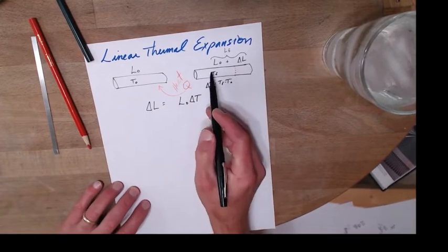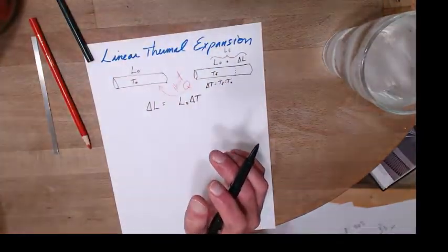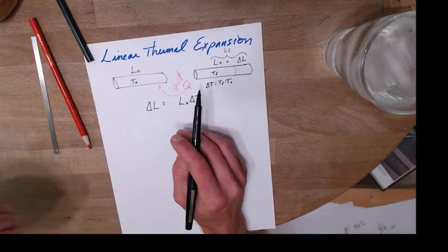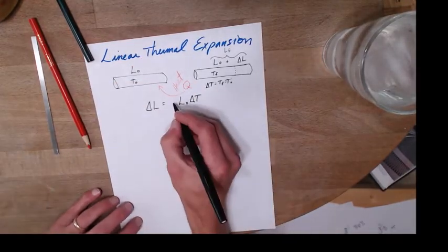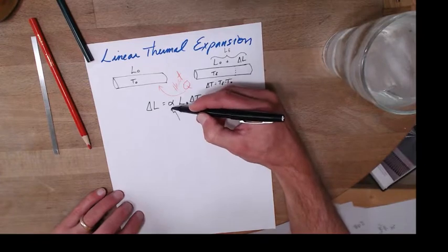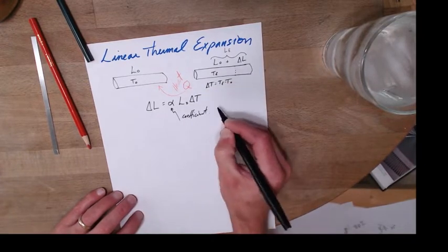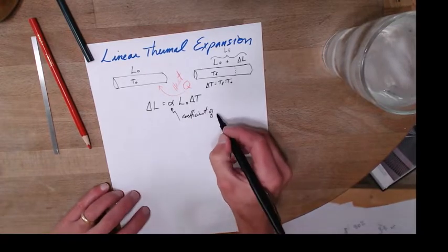And then it's going to depend on what type of material. Steel will expand at some rates, copper at others, aluminum at another one. So it's going to depend on the type of material. And this is called the coefficient of linear thermal expansion.